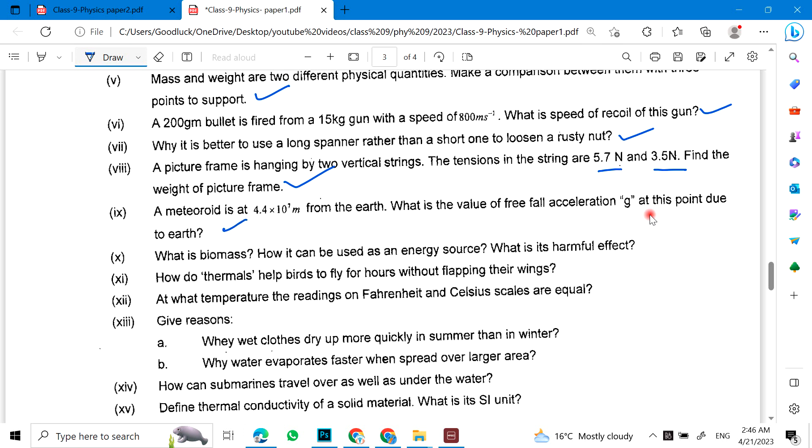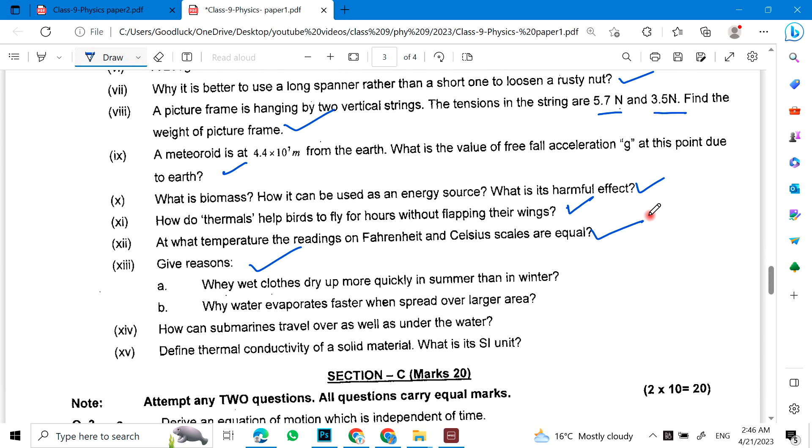Or, what is biomass? How it can be used as energy source? What is its harmful effect? How do thermals help birds to fly for hours without flapping their wings? At what temperature the readings on Fahrenheit and Celsius scales are equal? Give reasons. These two statements and reasons are written.